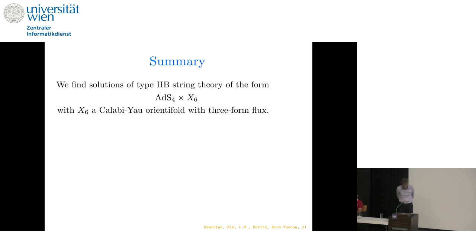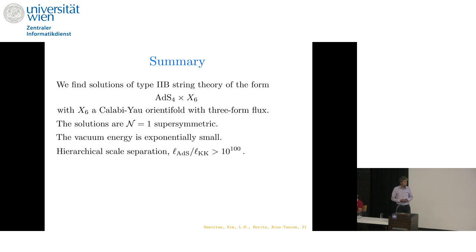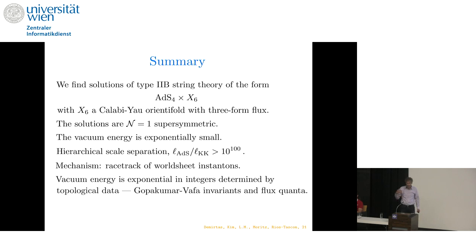So here's a one-slide summary of all of our results. If you want to take away one set of statements, here they are. We find solutions of Type 2B string theory of the form AdS4 cross X6, with X6 a Calabi-Yau orientifold. The solutions preserve four-dimensional n equals one supersymmetry. The vacuum energy is exponentially small, and these solutions feature hierarchical scale separation with the AdS length exceeding the Kaluza-Klein length by factors as large as 10 to the 100. Now, the mechanism is a racetrack of world-sheet instantons, as I will explain. And what happens is the vacuum energy ends up being an exponential in integers that are determined by topological data, Gopakumar-Vafa invariants and flux quanta, as in the example that I've shown and will keep on showing.